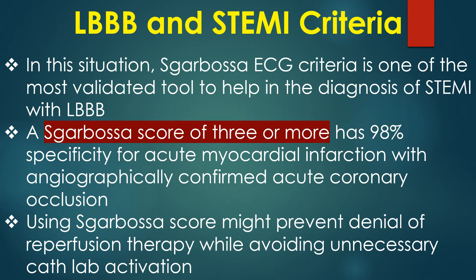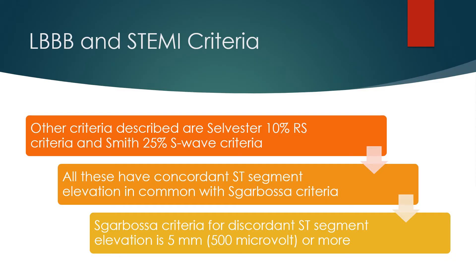In this situation, the Sgarbossa ECG criteria is one of the most validated tools to help in the diagnosis of STEMI with LBBB. A Sgarbossa score of 3 or more has 98% specificity for acute myocardial infarction with angiographically confirmed acute coronary occlusion. Using Sgarbossa criteria might prevent denial of reperfusion therapy while avoiding unnecessary cath lab activation. Other criteria described are the Silvestri 10% RS criteria and the Smith 25% STI criteria, all of which share concordant ST segment elevation in common with Sgarbossa criteria.